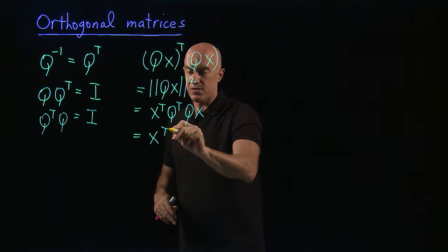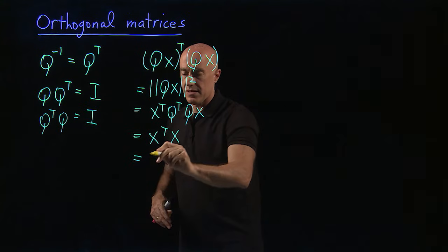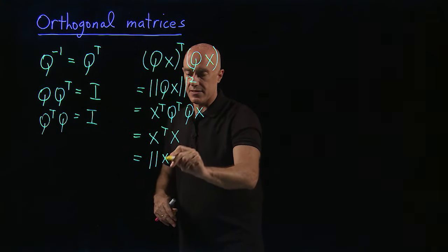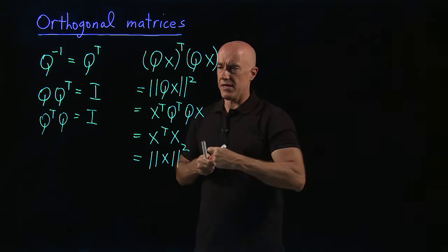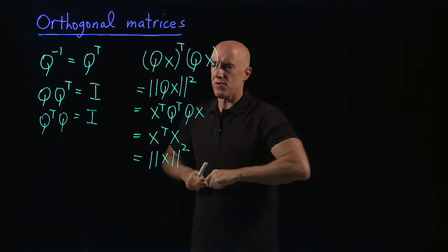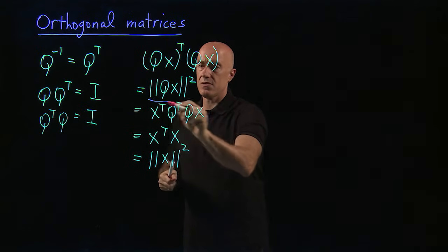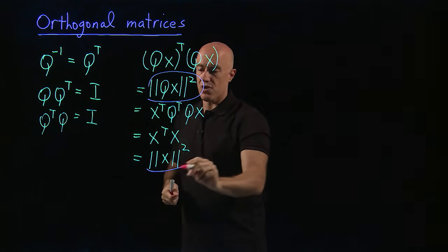So then this is just X transpose X. And that's the norm of X squared. So we have the norm of Q X. This one is equal to the norm of X.